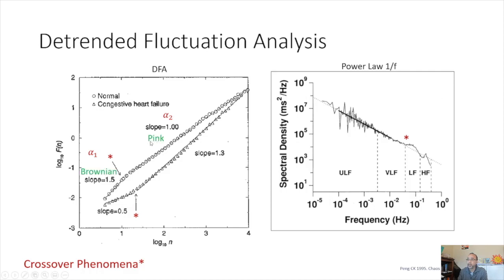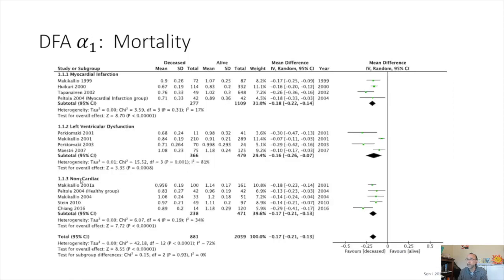For the healthy individual, the alpha 1 slope is close to 1, resembling pink noise, whereas what's considered healthy is a slope greater than 1 — more in the Brownian region. Congestive heart failure patients tend to have white noise-like alpha 1, whereas their alpha 2 is much more Brownian.